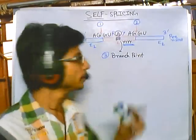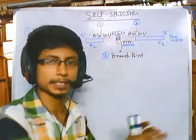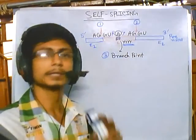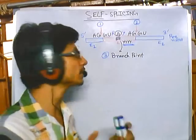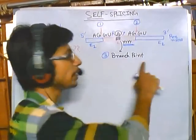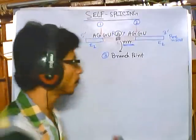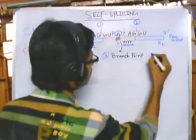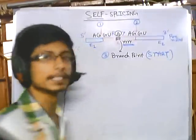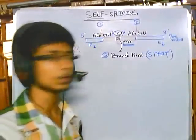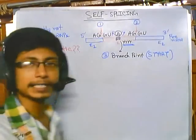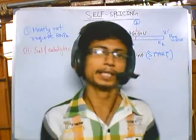To summarize, signals are present in introns, in exons, and at the intron-exon boundaries — all are important. Most important of all is the branch point, because it is the start point of any kind of splicing. Now let us look at the mechanism of self-splicing.